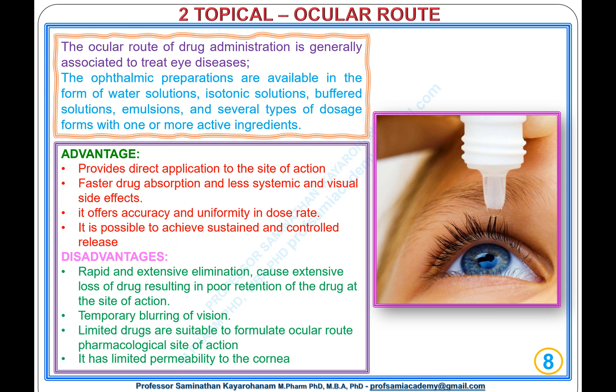Type 2, Topical: Ocular Route. The ocular route is generally used to treat eye diseases. Ophthalmic preparations are available as water solutions, isotonic solutions, buffered solutions, emulsions, and several types of dosage forms with one or more active ingredients. Advantages: provides direct application to the site of action, faster drug absorption, less systemic and visual side effects, and accuracy and uniformity in dose rate.